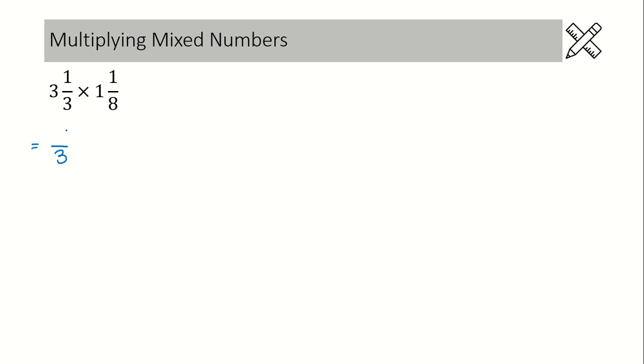We know that the denominator will always stay the same, so it's a good idea to write that denominator in first and then come back and figure out the numerator. To do that, we multiply these two numbers here, 3 times 3 is 9, add 1, and then we get our numerator of 10.